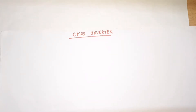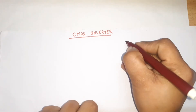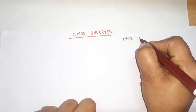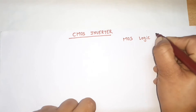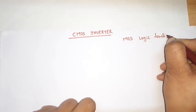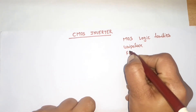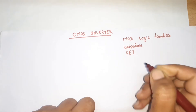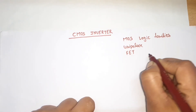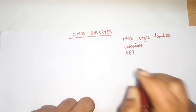Hello everyone. In this lecture I will discuss the CMOS inverter. CMOS stands for Complementary Metal Oxide Semiconductor. It comes from the MOS logic families, which are unipolar, and we use field effect transistors in which current direction depends on one type of carrier — either electrons or holes.